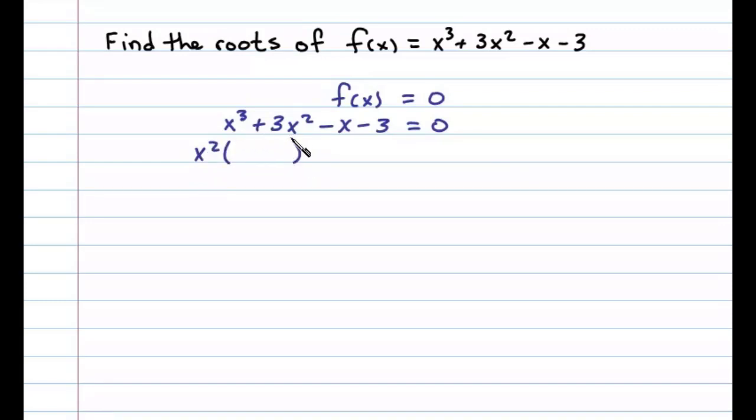Factoring out x² will have x²(x + 3). Now the GCF of the second two terms is 1, but since the leading coefficient is negative, we'll factor out a negative 1.